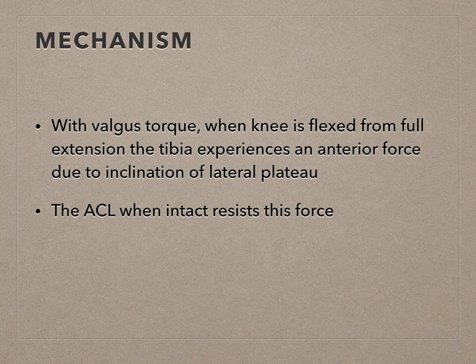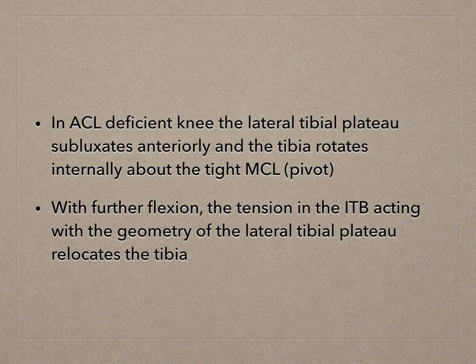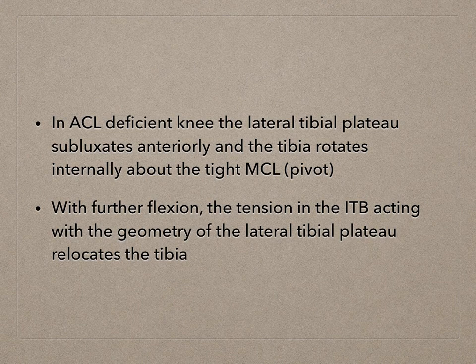The ACL, when intact, resists this force. When the ACL is torn — in an ACL-deficient knee — the lateral tibial plateau subluxates anteriorly, and the tibia rotates internally about the tight MCL; that is the pivot. With further flexion, the tension in the ITB acting with the geometry of the lateral tibial plateau relocates the tibia.